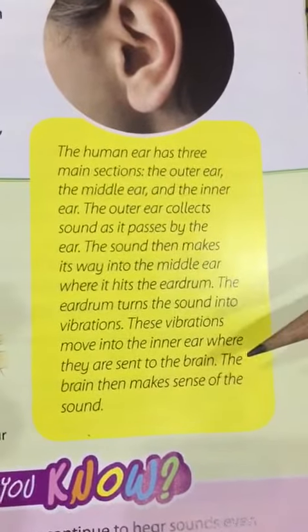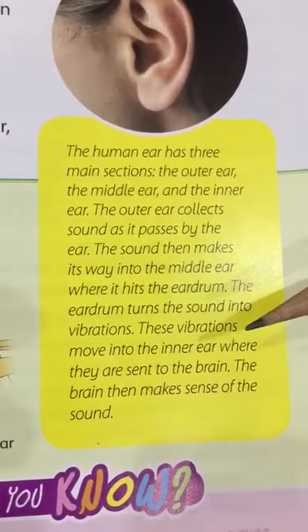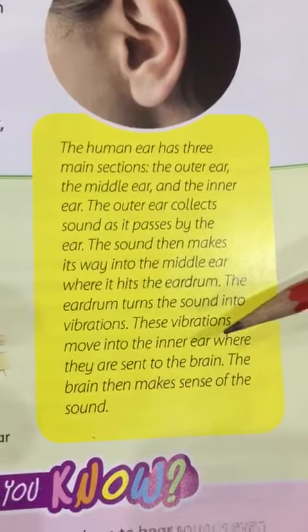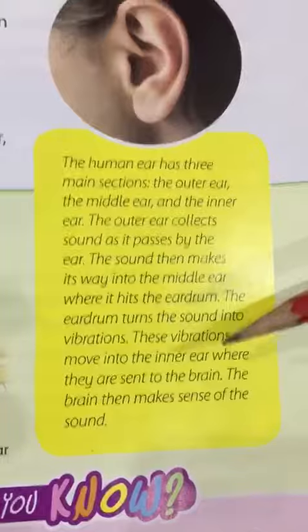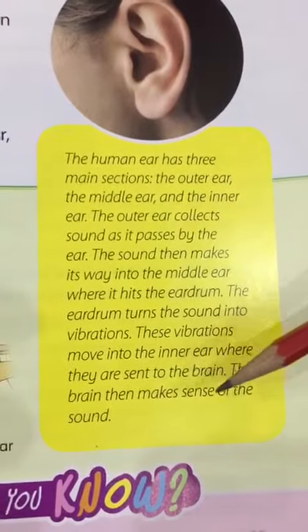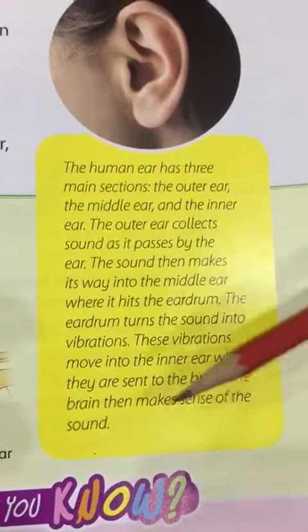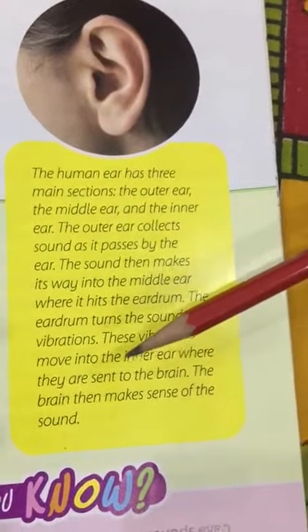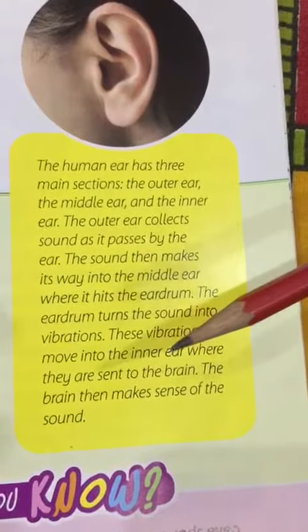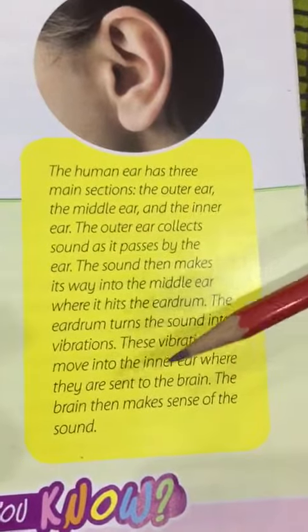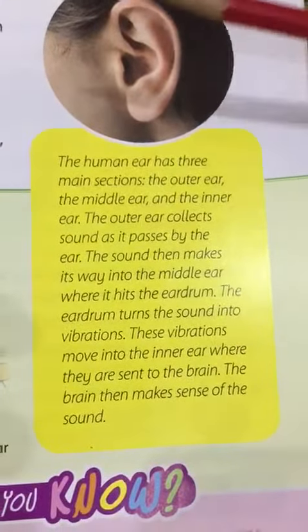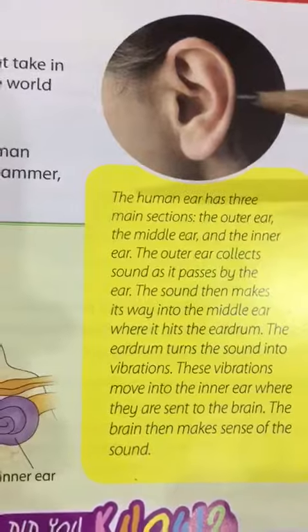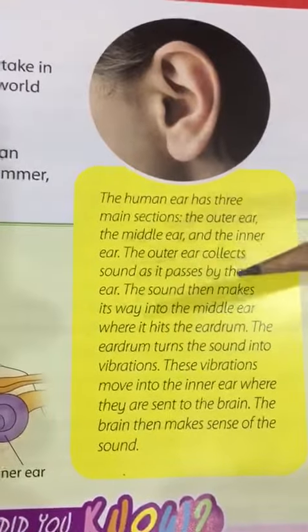In the inner ear, the cochlea contains a liquid which vibrates. The signals and impulses are sent to the brain. The brain then makes sense of the sound, telling us what the sound is — whether it is a sound or noise — and interprets it for us.